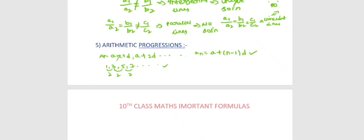The sum of n terms formula: 1 plus 3 plus 5 plus ... equals n by 2 into (2a plus (n minus 1) into d). Also, when the last term is known, sum equals n by 2 into (a plus l), where l is the last term.